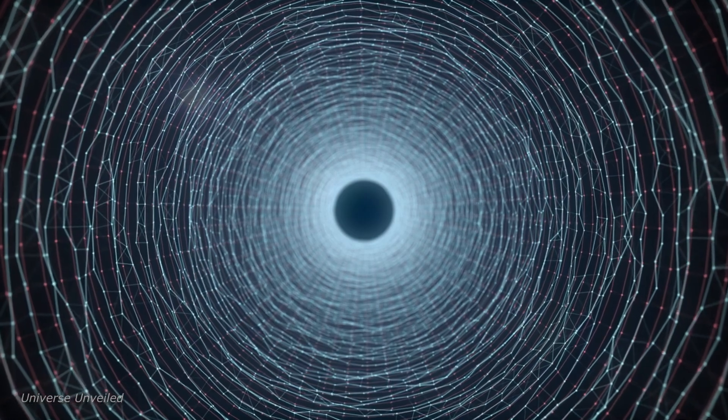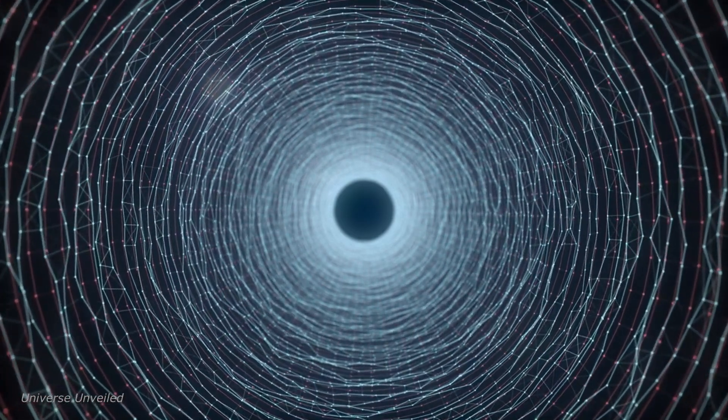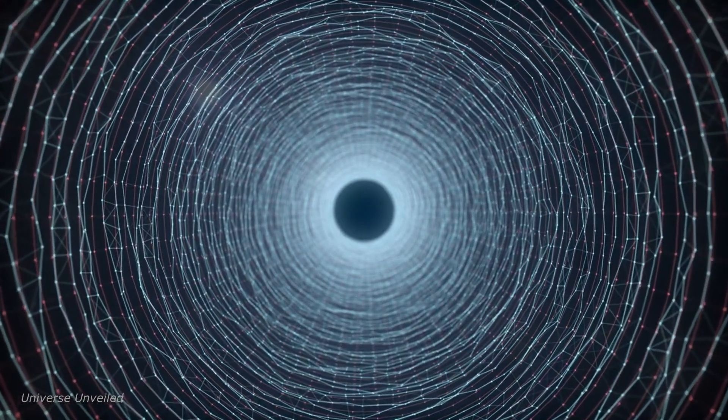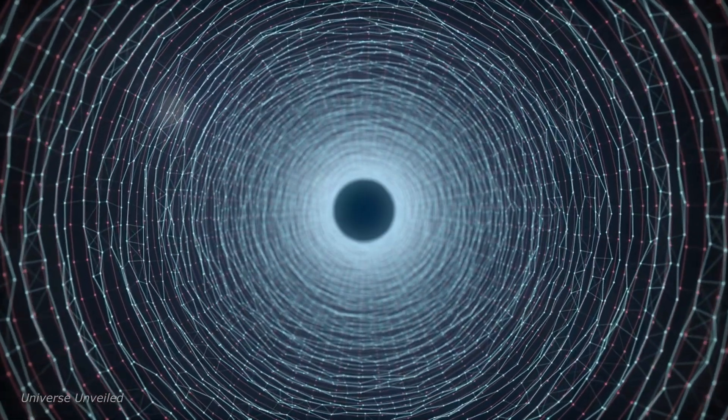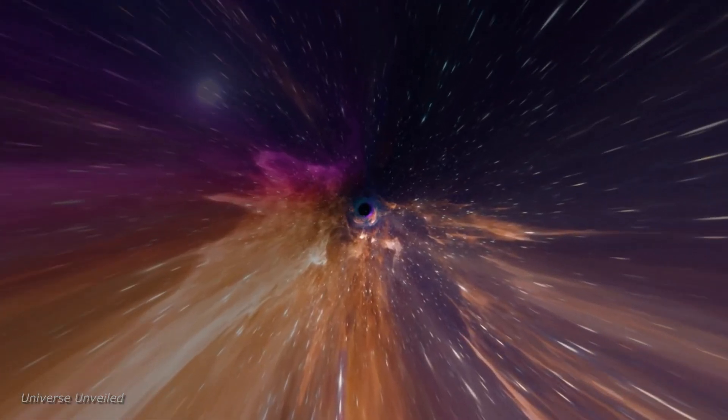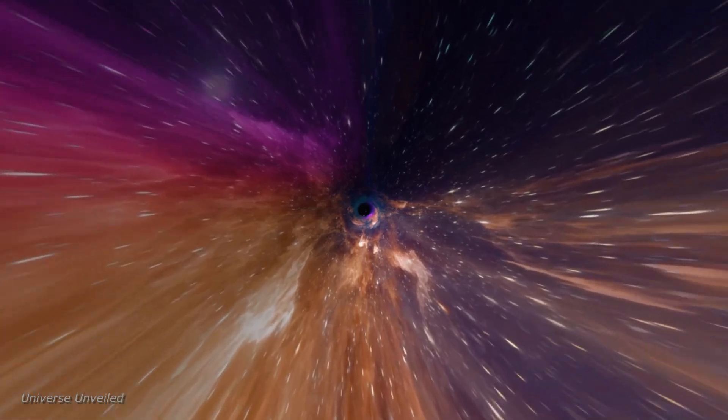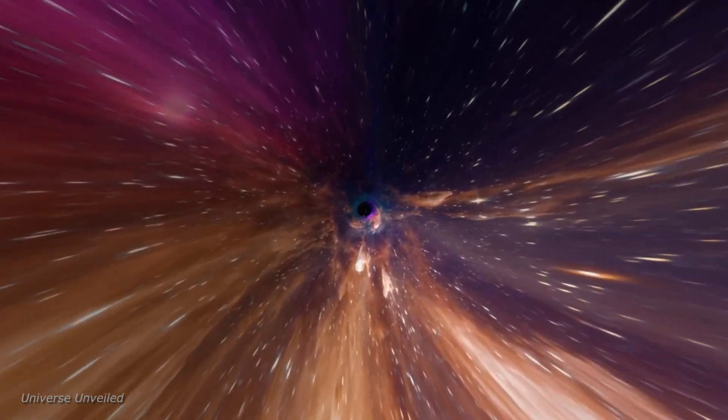Its primary mirror spans over 21 feet and is composed of 18 hexagonal segments that work in perfect unison to collect light from the cosmos. It is equipped with state-of-the-art instruments designed to dissect and analyze the light it collects, revealing the composition, temperature, and motion of celestial objects with unprecedented detail.